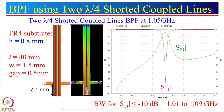Here a 50-ohm line feeds the input, and output is taken at a corresponding point. FR4 substrate is used again. The length is 40 mm, since the band pass filter is designed at 1.05 GHz — slightly higher frequency means slightly shorter length. The gap between the two resonators is 0.5 mm. This is the current distribution analyzed using IE3D software: blue shows zero current at the open circuit end, red shows maximum current at the short circuit end, consistent with a lambda-by-4 standing wave pattern.